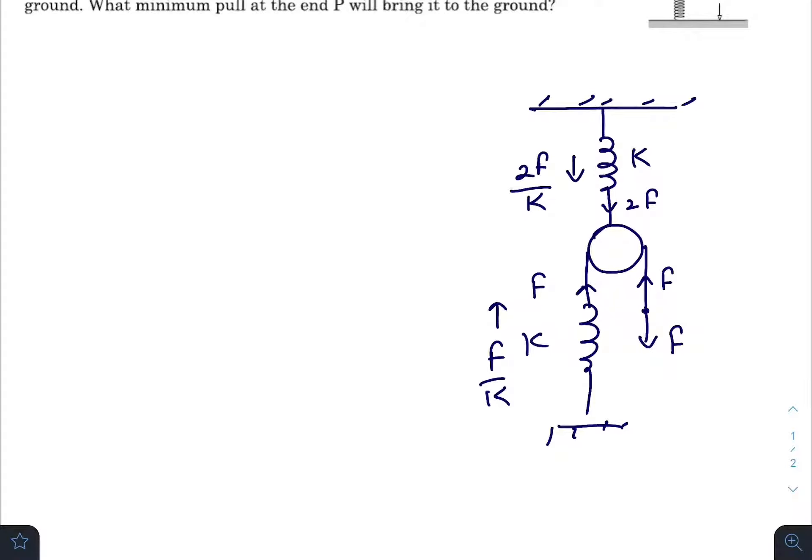As we know that work done by all the internal forces on the whole system will be zero. So here the internal forces are this F, this one, and this one. Work done by this force will be minus F times h because this point goes downward by distance h. Work done by this force on the applied point will be